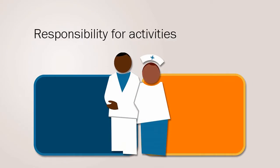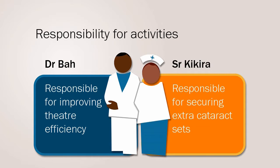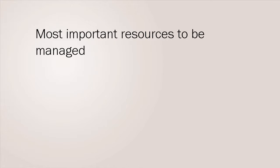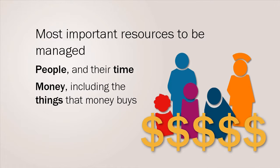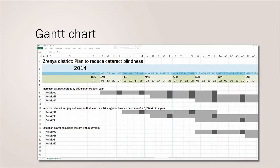A named person must be made responsible for each activity. This person is responsible for managing the activity and ensuring it gets completed. The most important resources that need to be managed in an activity are people and their time, and money including the things that money buys. To manage time, an activity time plan such as a Gantt chart is developed. Each activity per objective is listed along with an indication of when it will be carried out and completed. This is monitored and updated as the activity is carried out.